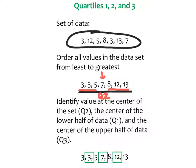Then look at the lower half, or left half. The number at the center of the lower half would be Q1. And then the upper half, or right side — this would be Q3, the 12. We identify the value at the center of the entire set as Q2, the center of the lower half as Q1, and the center of the upper half as Q3. At the bottom of the screen, the three numbers in the squares are Q1, Q2, Q3 — quartile 1, quartile 2, quartile 3.